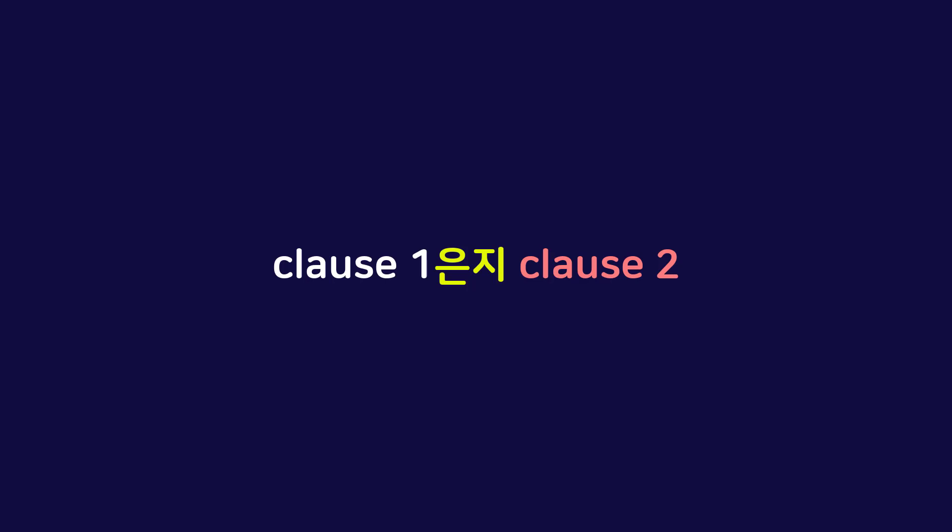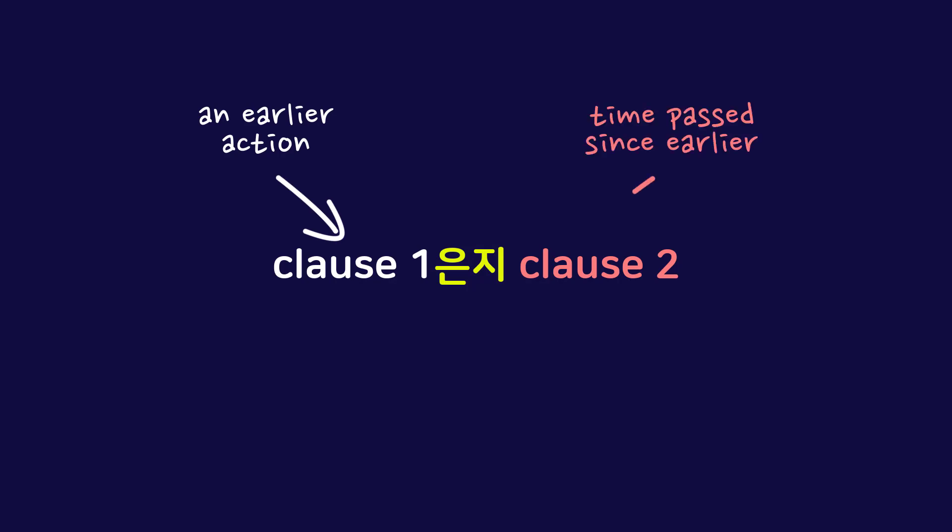은지 is similar in meaning to the prepositions 'for' and 'since' when we use the present perfect tense. To use 은지, we add 은지 to the first clause. A clause is a group of words containing a verb. In a sentence using 은지, there are two clauses: the first clause describes an action from an earlier time, and the second clause indicates how much time has passed since that earlier action. Let's now take a look at two example sentences.